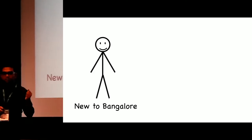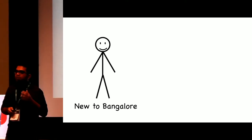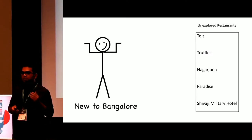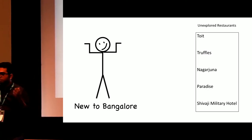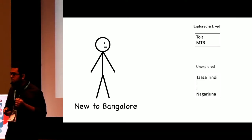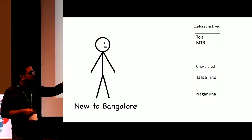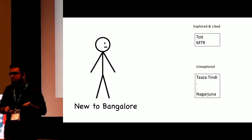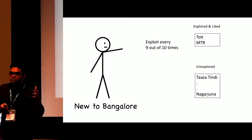Let's say we have a guy who just came to Bangalore and wanted to have a good dining experience, but he has no idea which restaurants are good and which are bad. He asked a couple of friends and they suggested a couple of restaurants. He went there and liked them, so he made two buckets — one for the restaurants he liked, and one for those he had never explored.